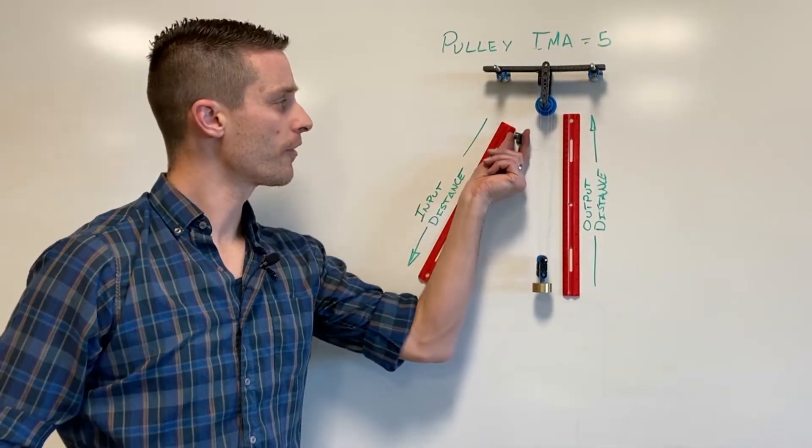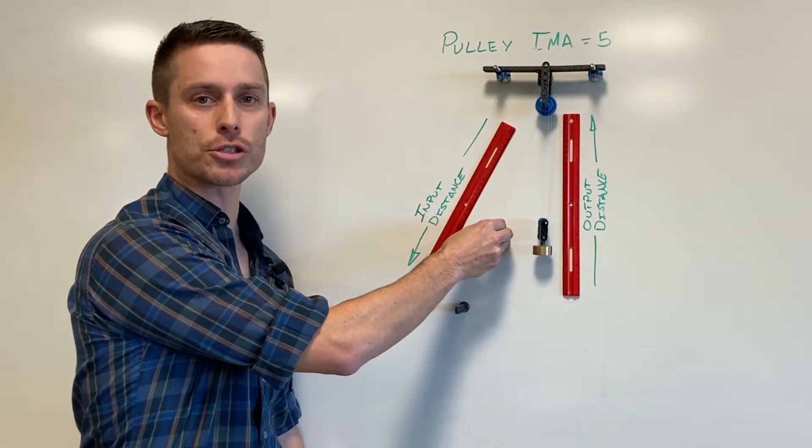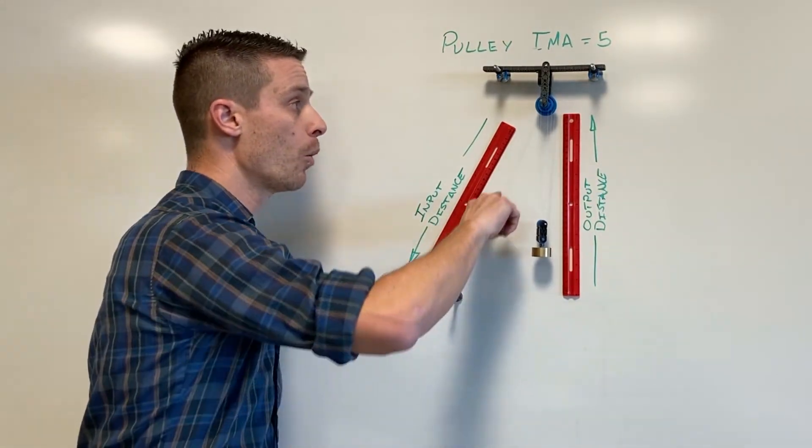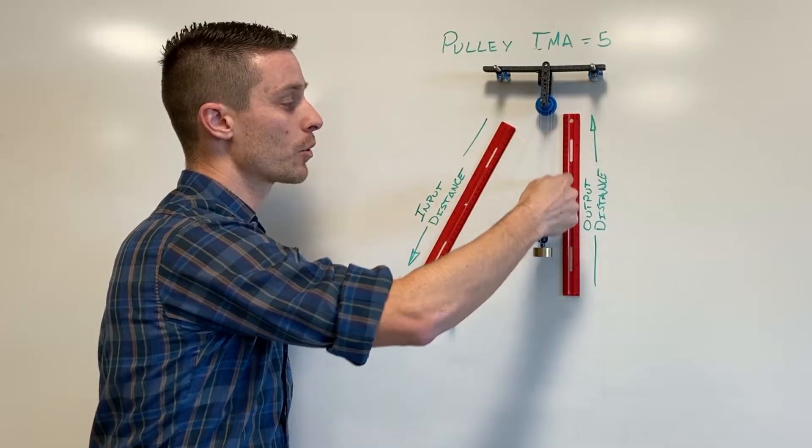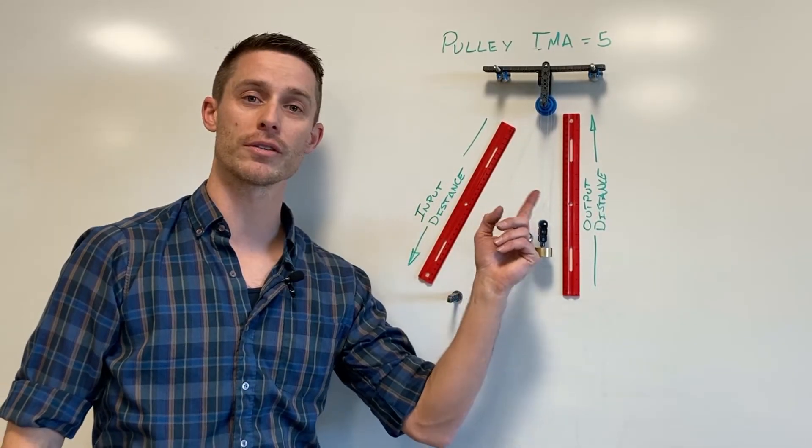See if I was to pull on this string it's ultimately providing some tension in the string. So let's say I pull on this with a force of say one Newton. That one Newton of tension is going to be transferred through to the other five strands over on this side over here.